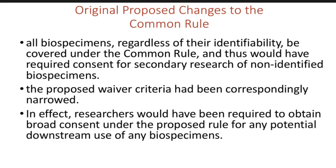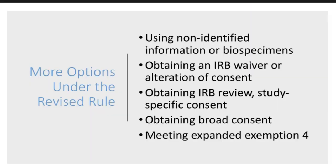When the proposed changes in the Common Rule were open for public comment, there were many expressed concerns about these proposed changes as they formed a rigid framework. New changes were proposed to the Common Rule. In order to do secondary research, there are now more options. One, use non-identified information or biospecimens. Two, obtain an IRB waiver or alteration of consent for identifiable specimens. Three, obtain IRB review if one had obtained study-specific consent. Four, do research on secondary samples if one had obtained broad consent. And lastly, one could see if their research study met an expanded exemption four.